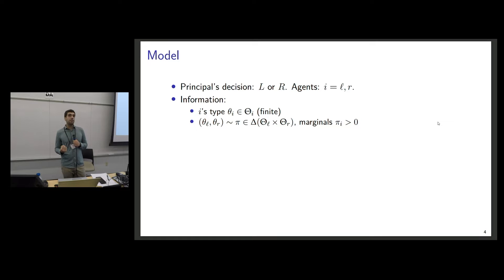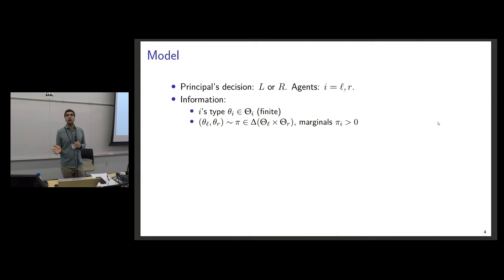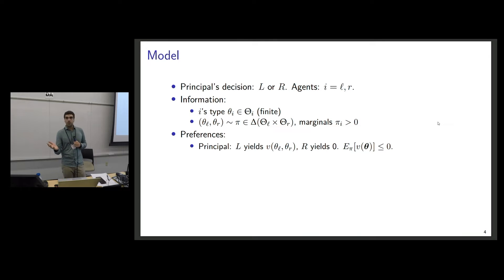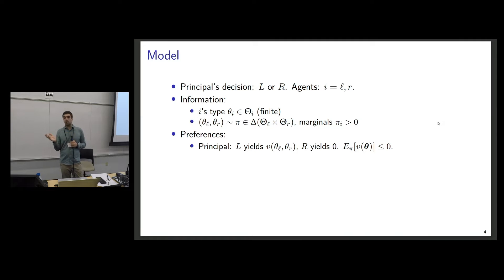Here is the model. Each agent has a privately known type drawn from some finite type space, and the joint type distribution pi can be anything arbitrary. The principal's payoff from choosing decision L is V(θ_L, θ_R), where θ are the types. Without loss, the principal's payoff from decision R is normalized to 0, and R is the ex-ante preferred decision of the principal. Agent L always prefers option L, and agent R always prefers option R.